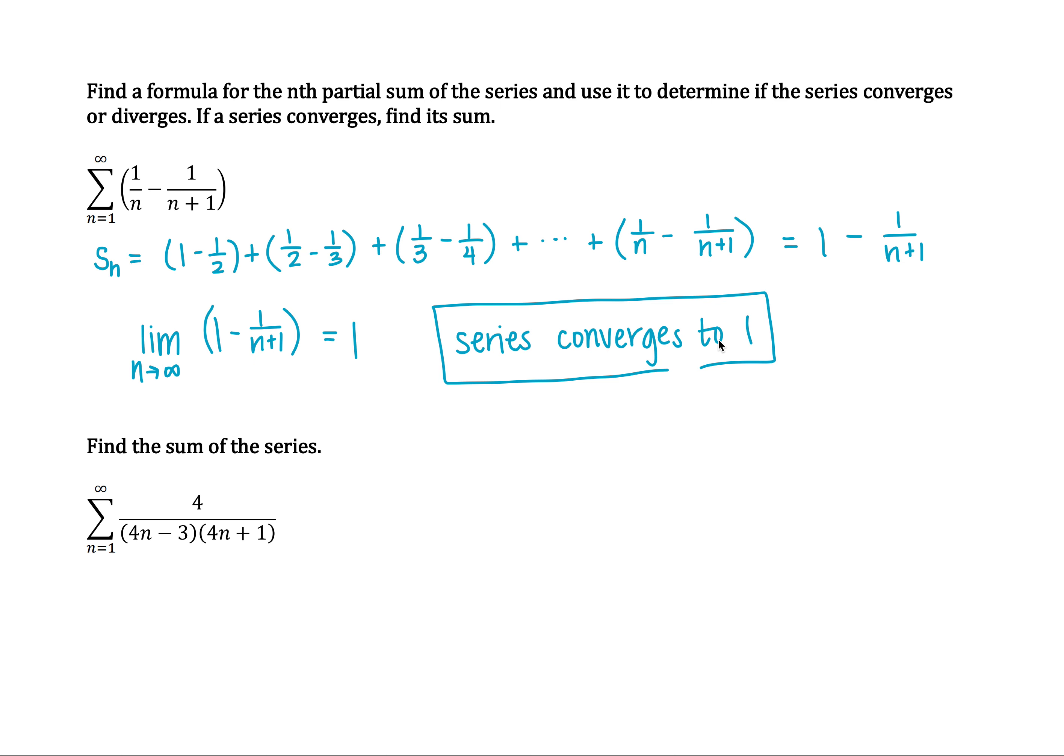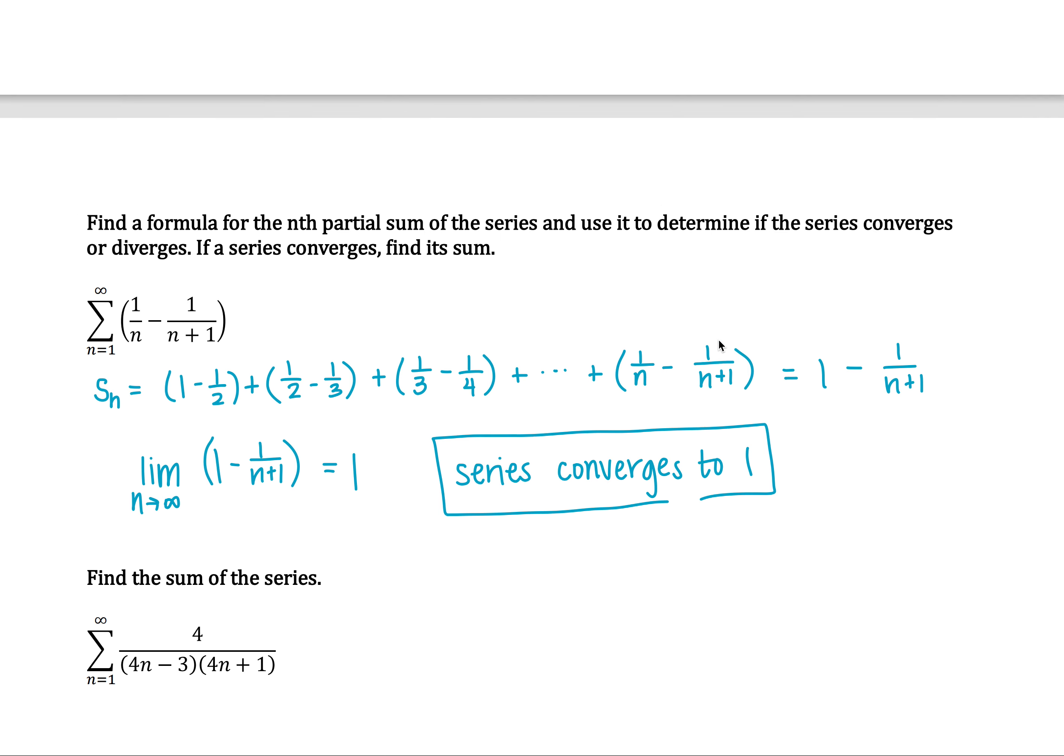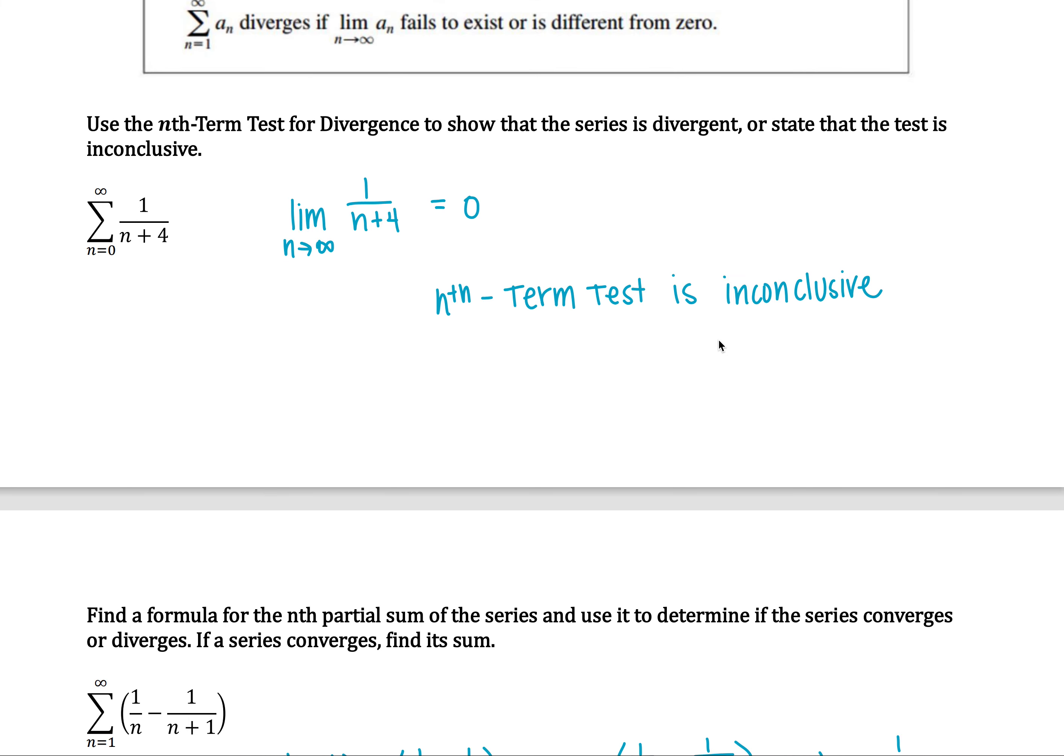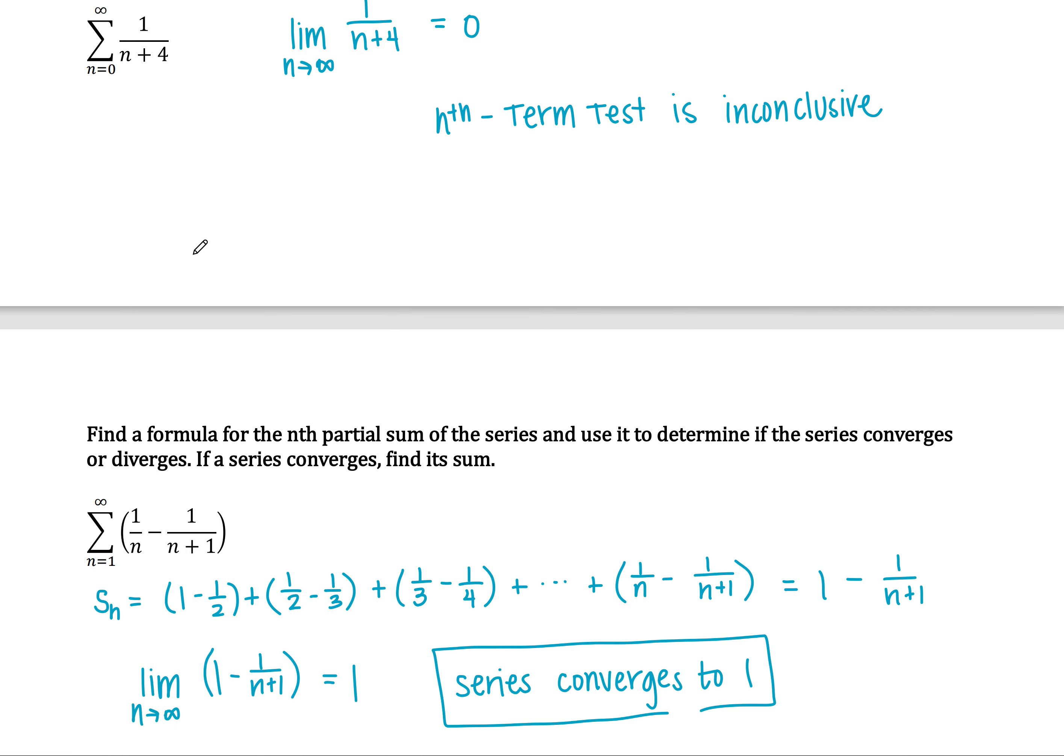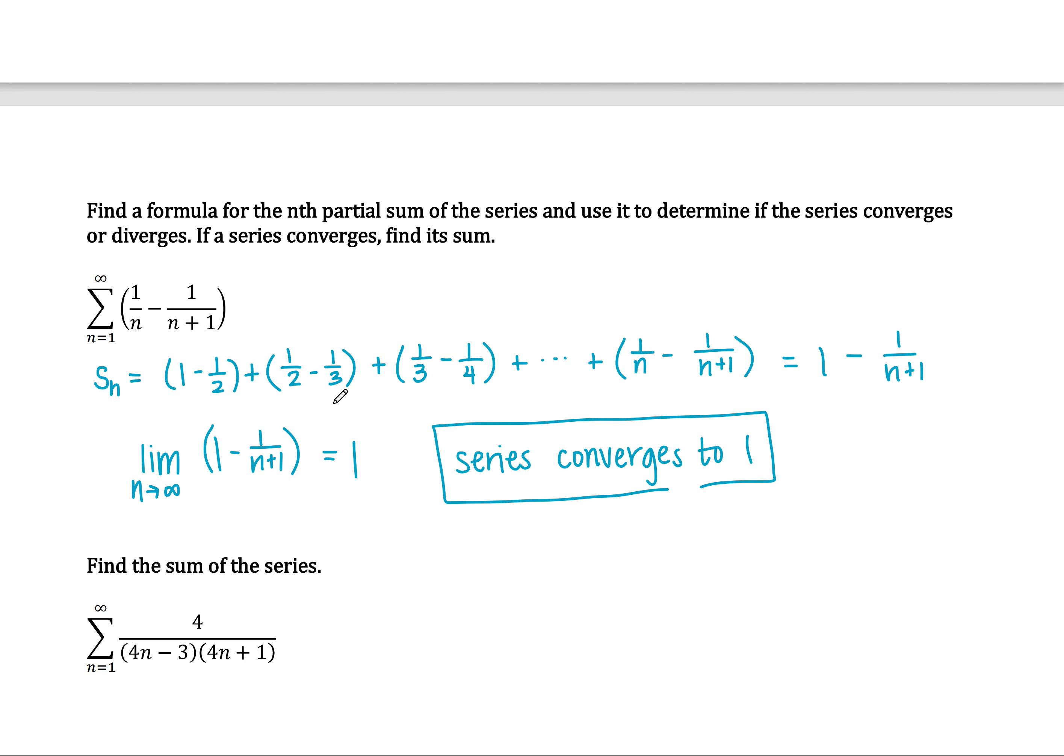I do want to make a quick distinction. When we look at the nth term test, we're looking at an individual term, basically a term of the underlying sequence. Here we're looking at the partial sum where we're adding together n terms of that sequence.